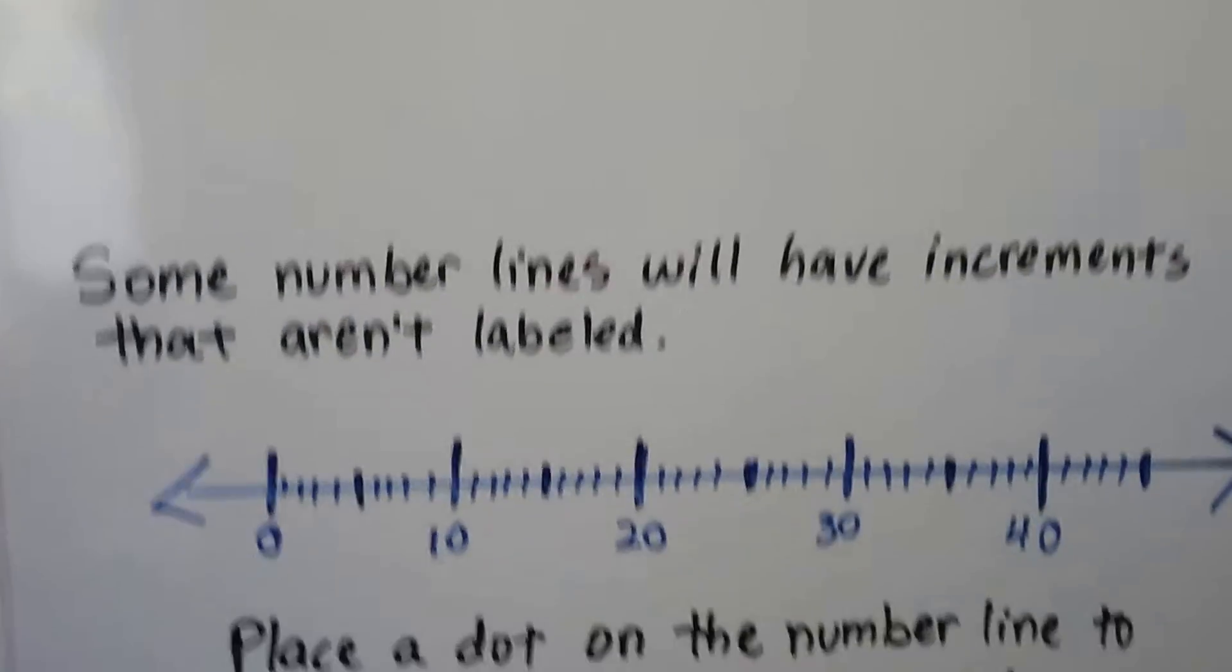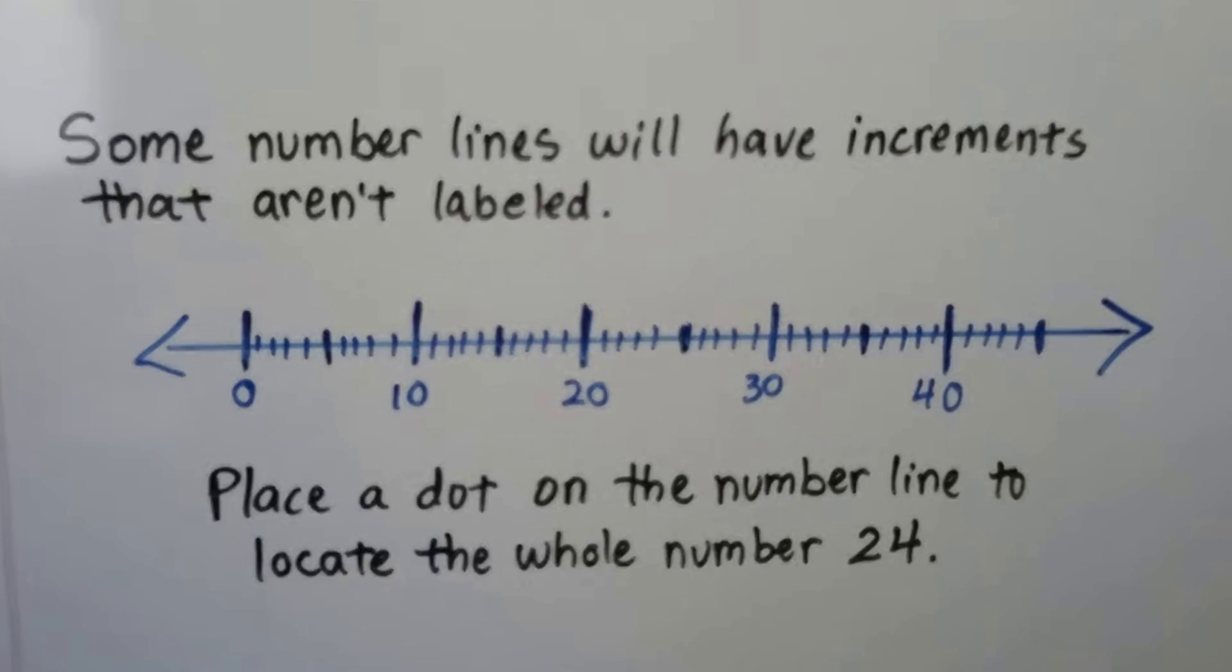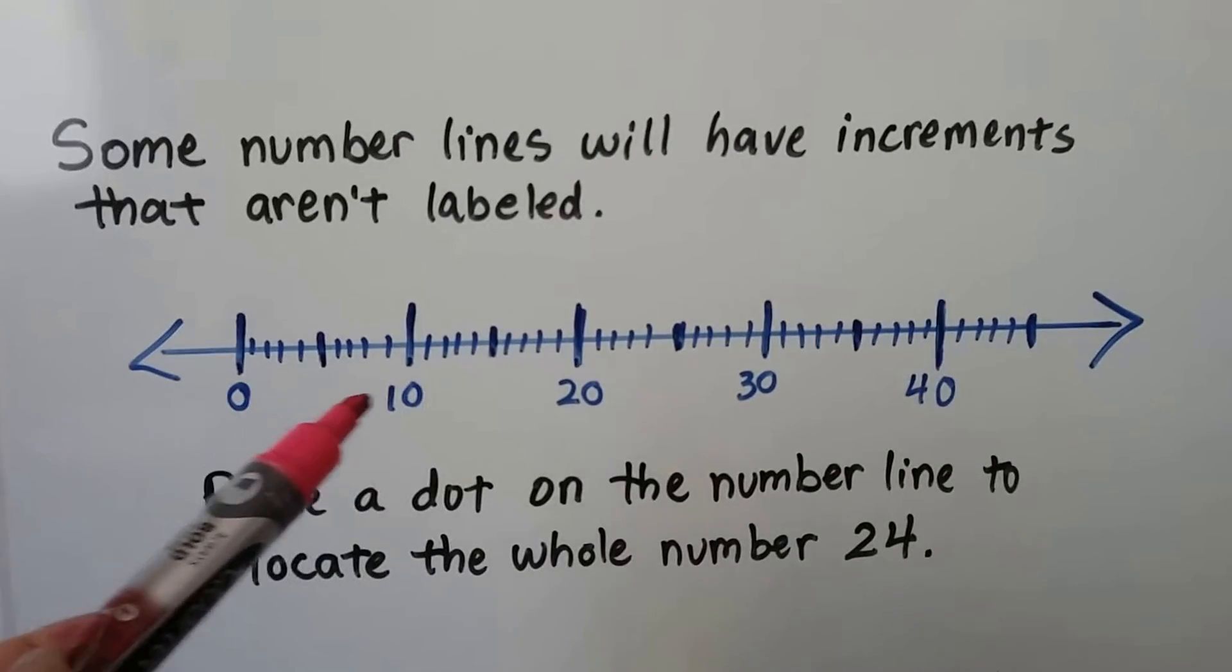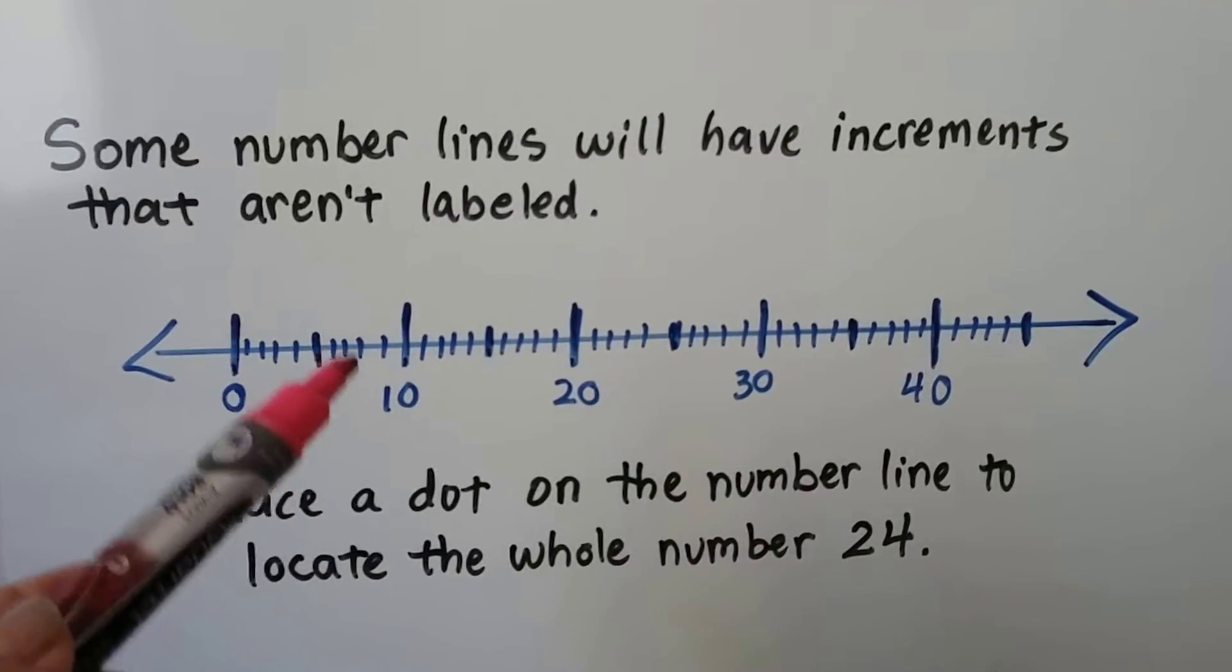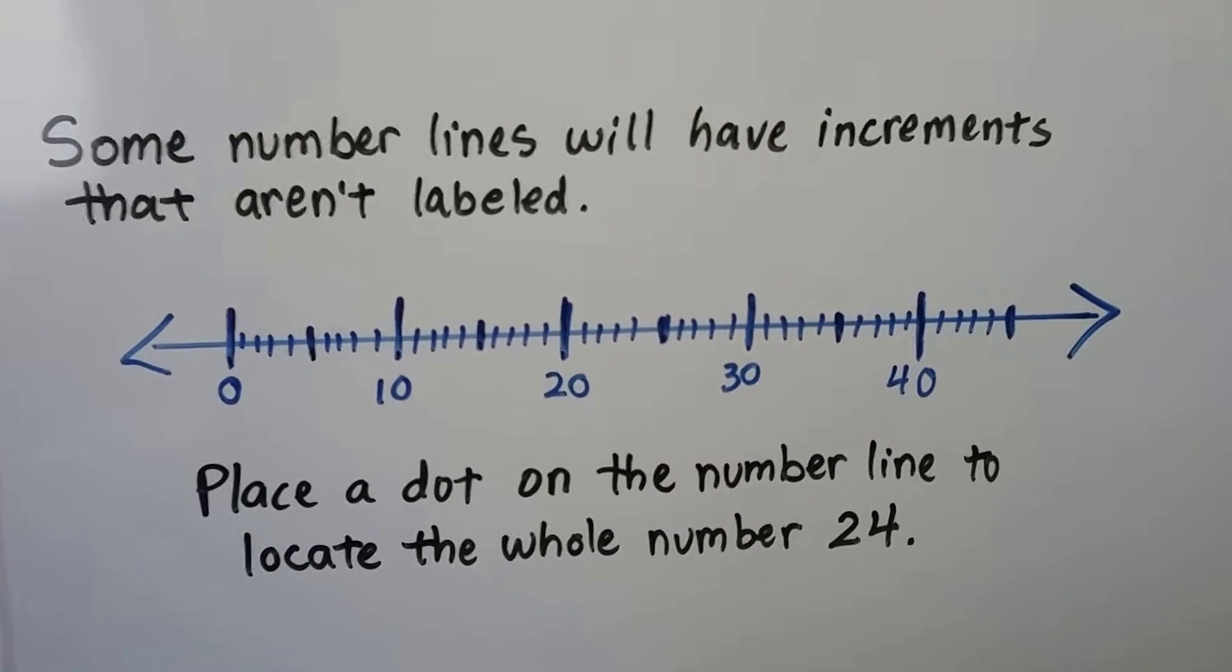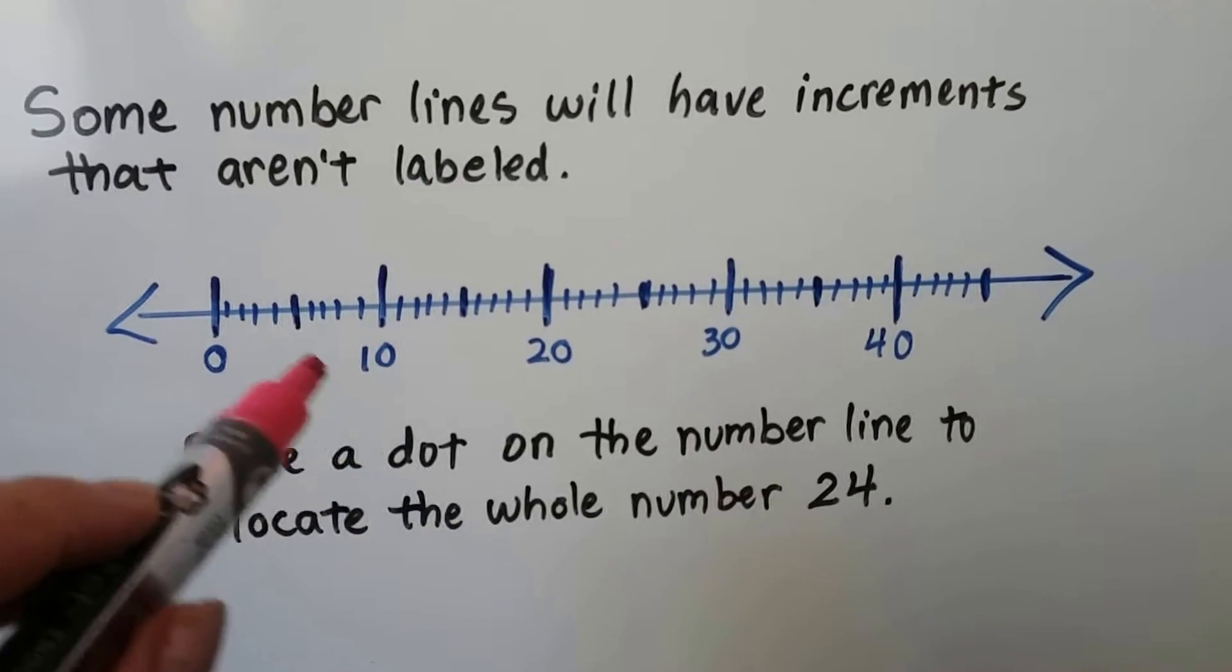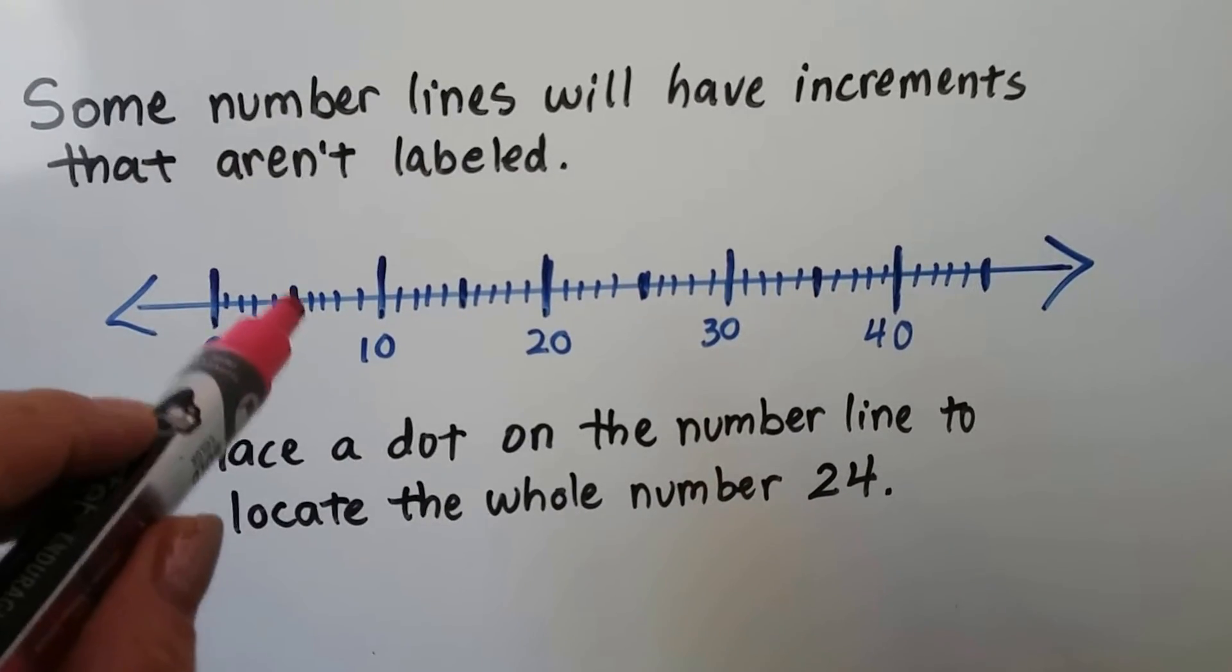Let's try this one. It says some number lines will have increments that aren't labeled. It's almost like a ruler where it has the inch mark and it's got all the little notches on the ruler and you have to figure out that it's a half inch or fourth inch or eighth inch. So that's the way this is. We can see it goes from 0 to 10 so this notch right here must be a 5 because it's in the middle.